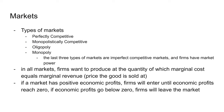The first thing we're going to start off with today is markets. In economics there are four types of markets: perfectly competitive, monopolistically competitive, oligopoly, and monopoly. The last three market types are imperfectly competitive markets, and in these markets firms have market power. In any market, firms want to produce at the quantity where marginal cost equals marginal revenue, and marginal revenue is basically the price at which their good is sold. If a market has positive economic profits, firms will enter until economic profits are zero, and when economic profits go below zero firms will leave the market until it's back up at zero.